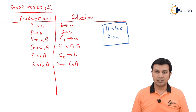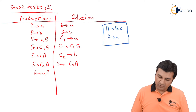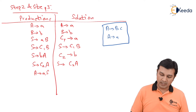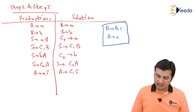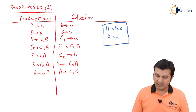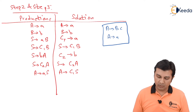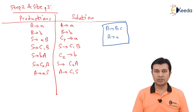Now consider A gives AS. We already have the substitution C1 for small a. So I write A gives C1S, and since it is already in CNF form, I directly add it to the solution.